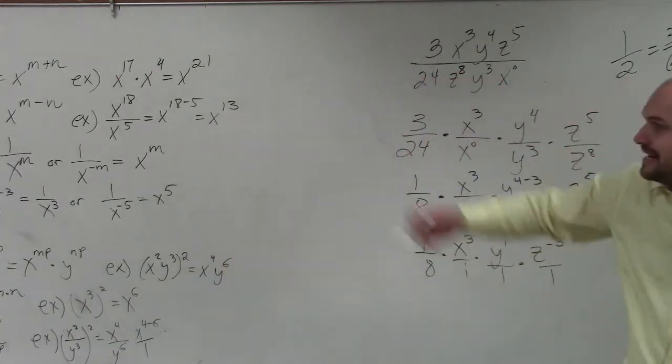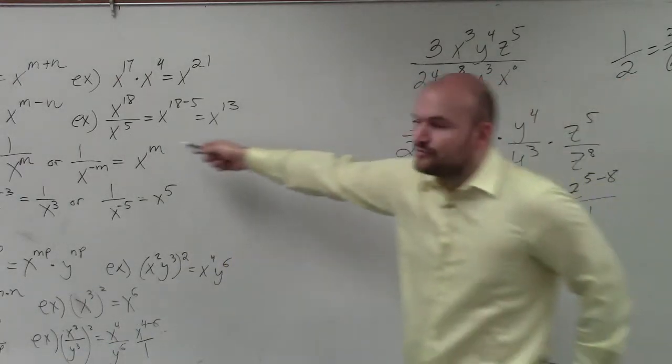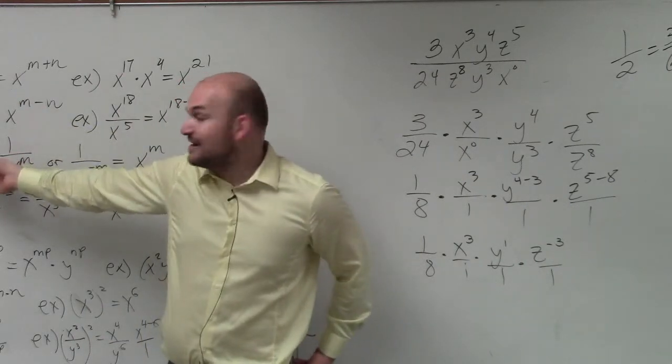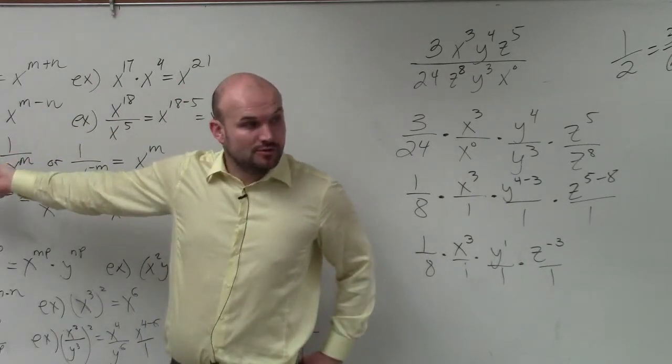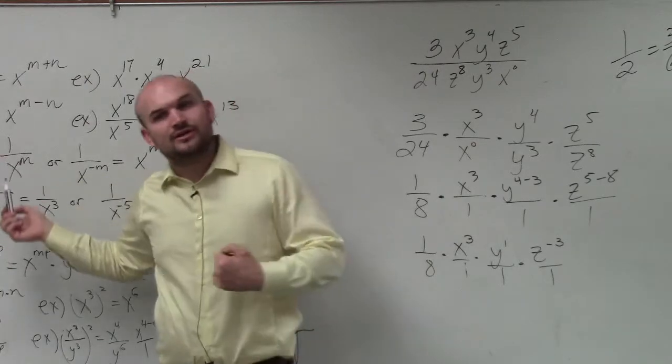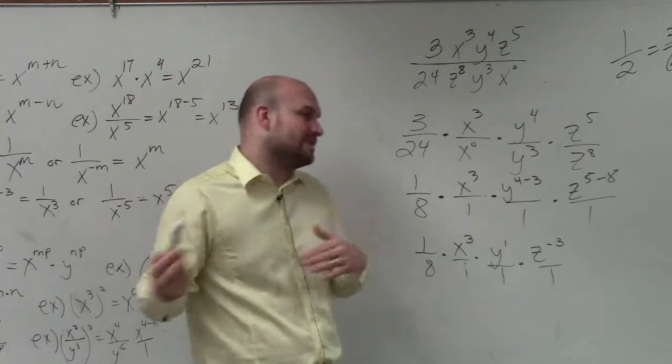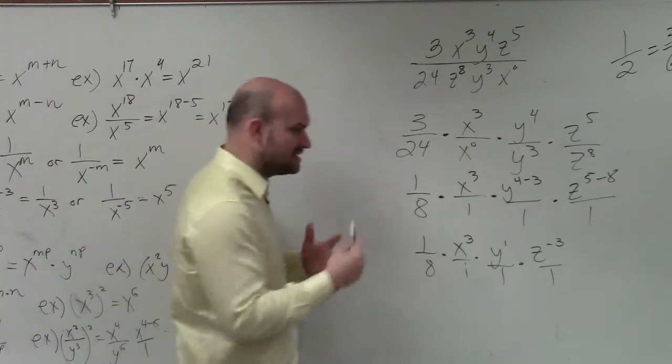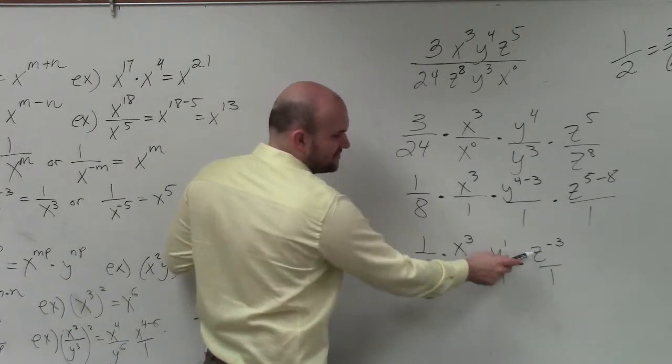So on this problem, again, now we look over here. I have to use the negative rule. And what the negative rule states is whenever you have a negative exponent in the numerator, to write it in the denominator, or to make it positive, you have to write it in the denominator. Again, which I'll explain in more depth next class period or next video.